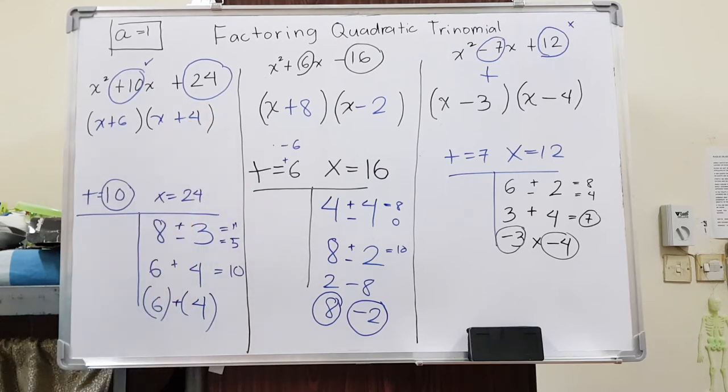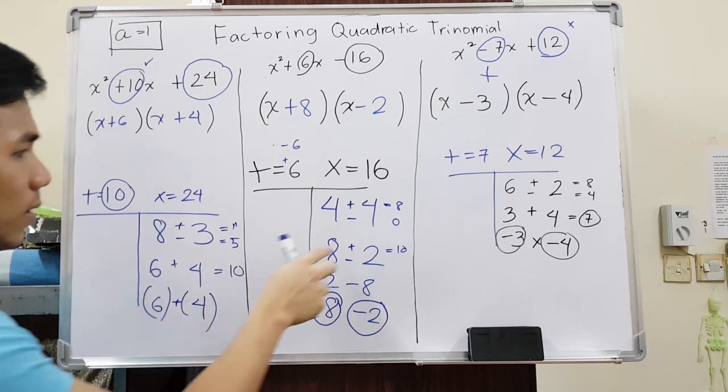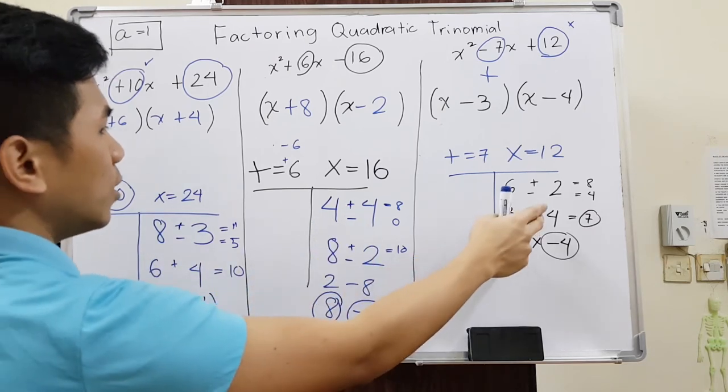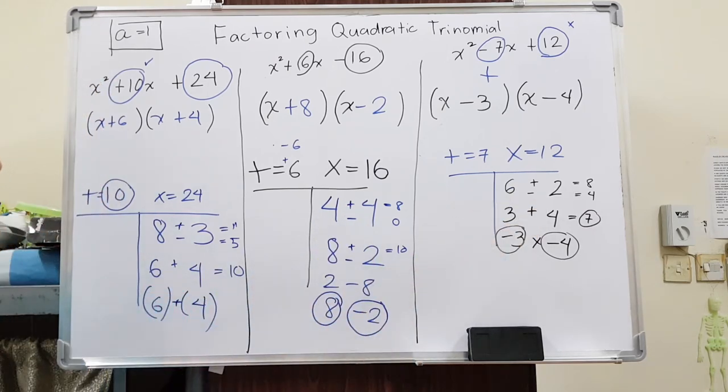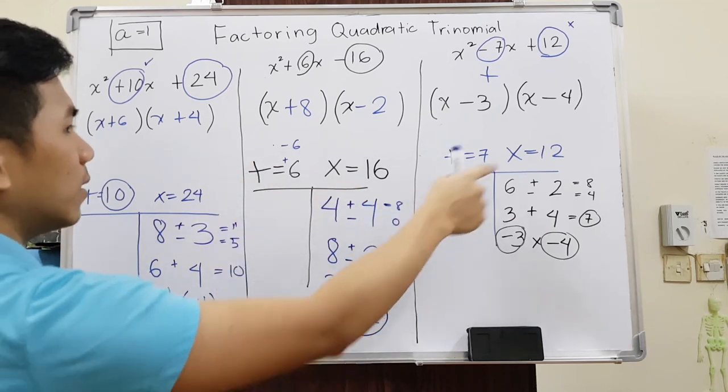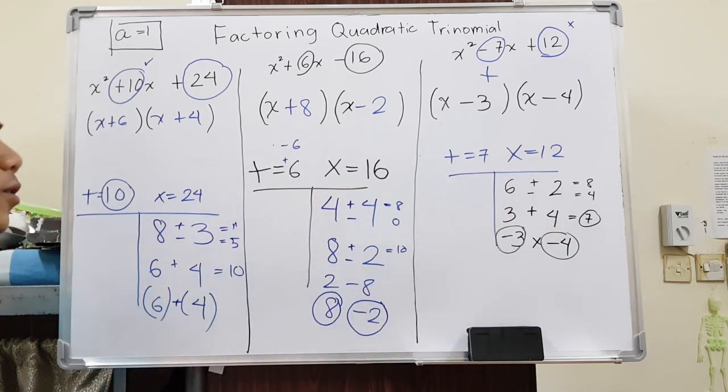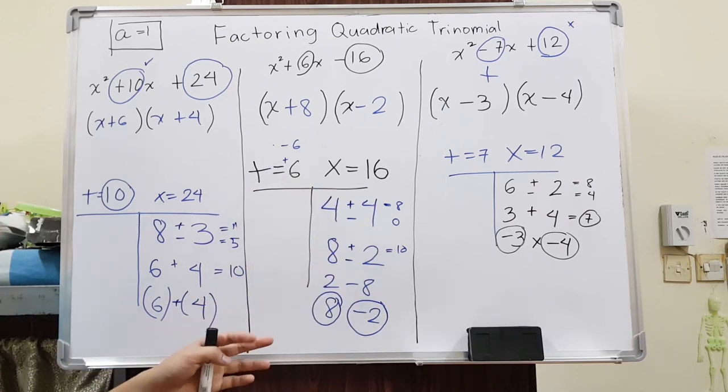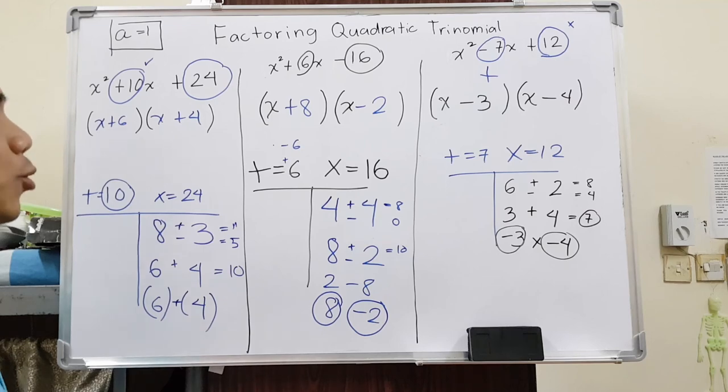As you can see here, if you are good in integers, these ones are going to be easy. You can easily find them, you can even solve them in your head, you don't even have to do this one. But of course, if you are not that good with that, you can always work using this table even though it takes longer time. And I also made a video on how to do integers.